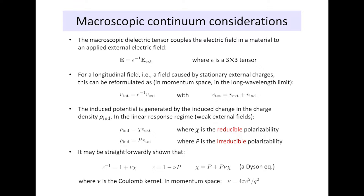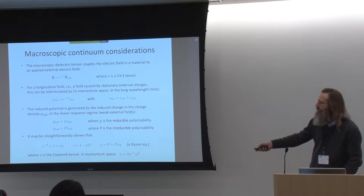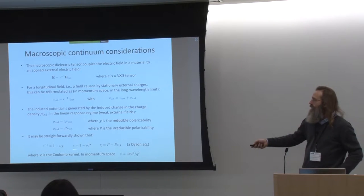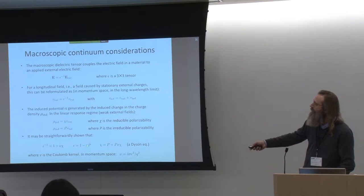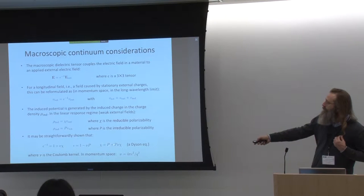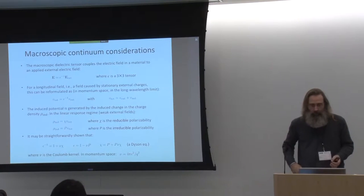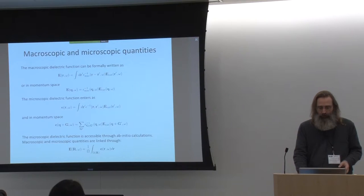The inverse dielectric tensor is related through this relationship to the reducible polarizability. This ν here is essentially the Coulomb interaction — so this polarizability times the Coulomb interaction plus one gives us the inverse dielectric tensor. There's a relationship between the irreducible polarizability and the dielectric tensor. And between both polarizabilities there's a relationship of this form, which is a Dyson equation or Dyson-like equation.